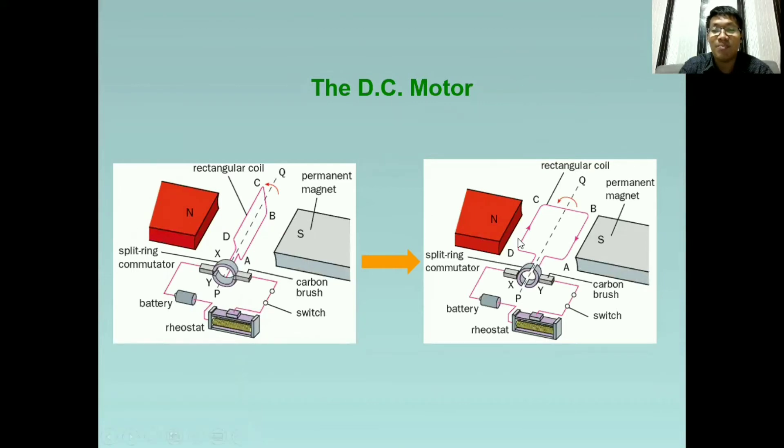So kung makikita nyo, nagpalit na si C and D and D and A. And this one is what we call half of a revolution. So kalahati ng isang revolution or isang cycle.